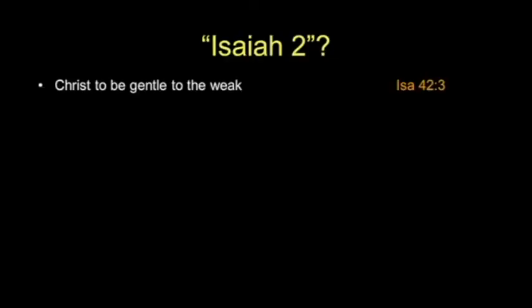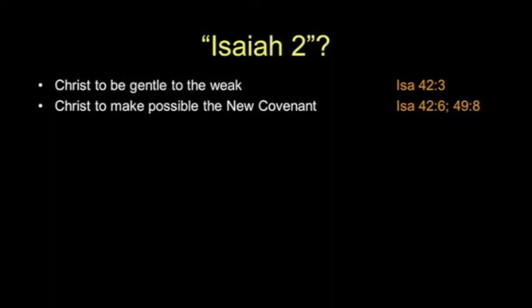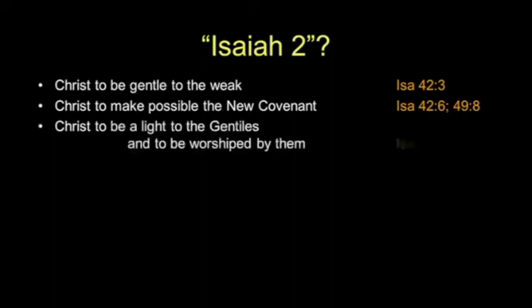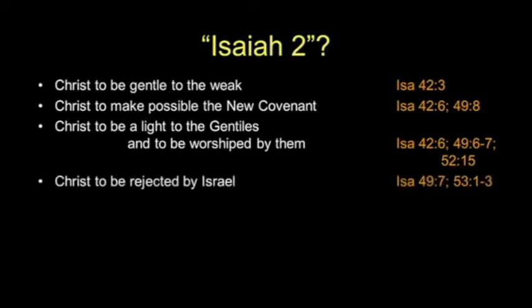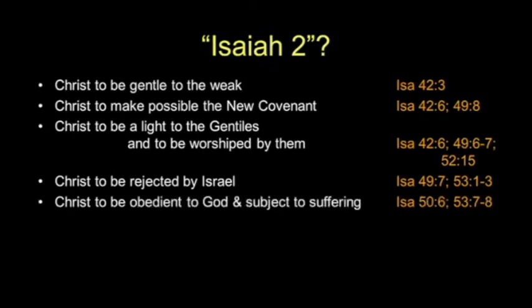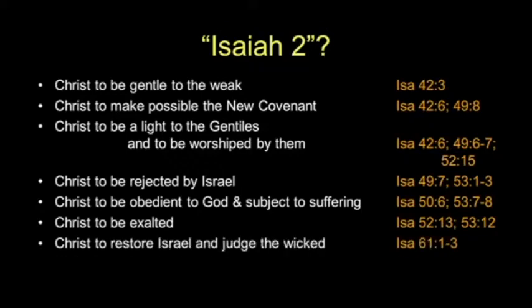From Isaiah part 2: Christ to be gentle to the weak in Isaiah 42. Christ to make possible the new covenant in Isaiah 42 and 49. Christ to be a light to the Gentiles and to be worshipped by them is in 42, 49, 52, and so forth. Christ to be rejected by Israel is described in Isaiah 49 and detailed in 53. Isaiah 53 summarizes Paul's epistles more succinctly than any of us probably could. Christ to be obedient to God and subject to suffering in Isaiah 50 and 53. Christ to restore Israel and judge the wicked in chapter 61.